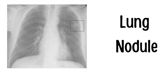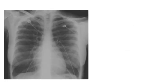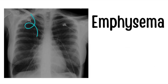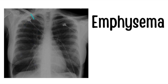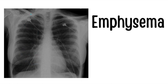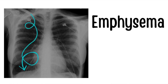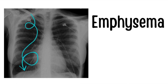This is emphysema. A chest x-ray of a patient with emphysema may show large volume hyperlucent lungs, flattened hemidiaphragms, widened costophrenic angles, horizontal ribs, and a narrow mediastinum.